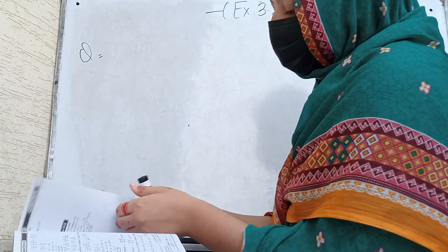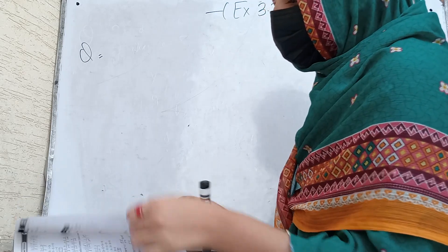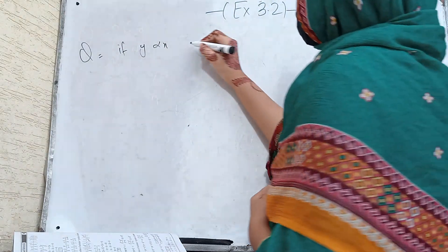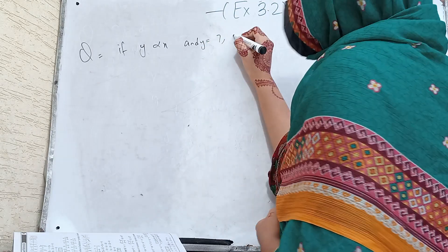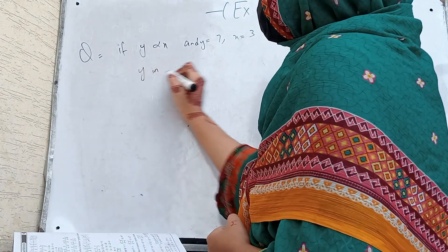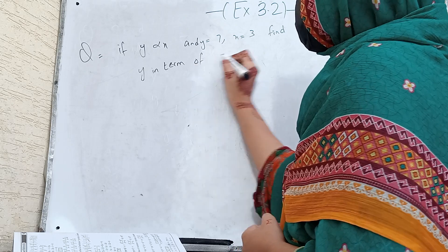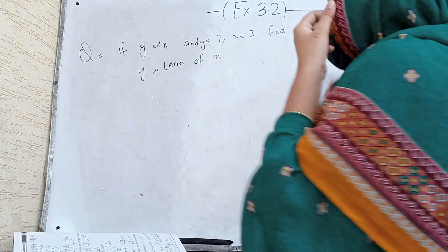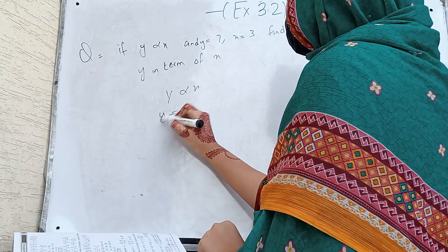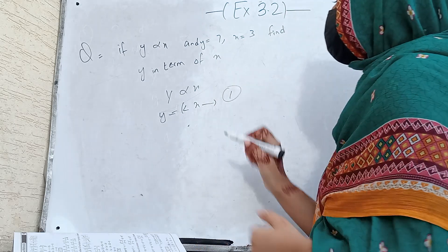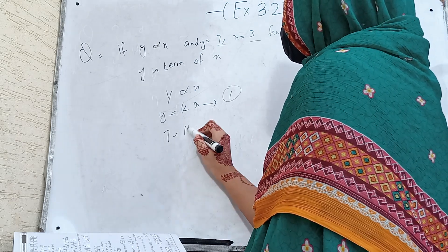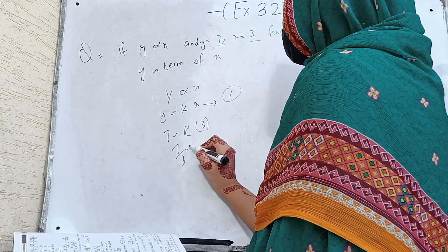Next, if y is directly proportional to x and y is equal to 7, x is equal to 3, find y in terms of x. We have y equal to kx as the first equation. We put y equal to 7 and x equal to 3 to find k: 7 equals 3k, so k equals 7 by 3.